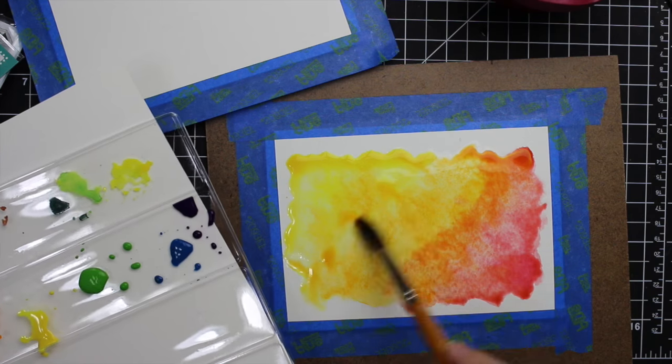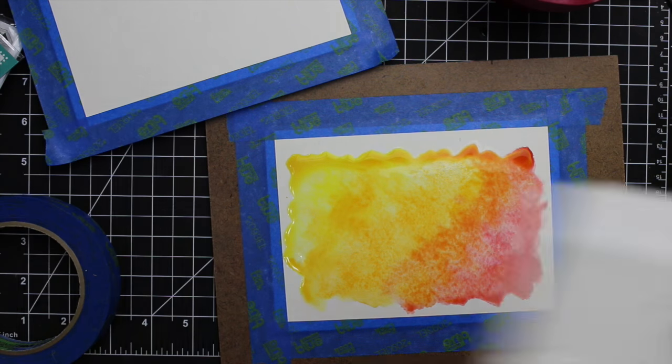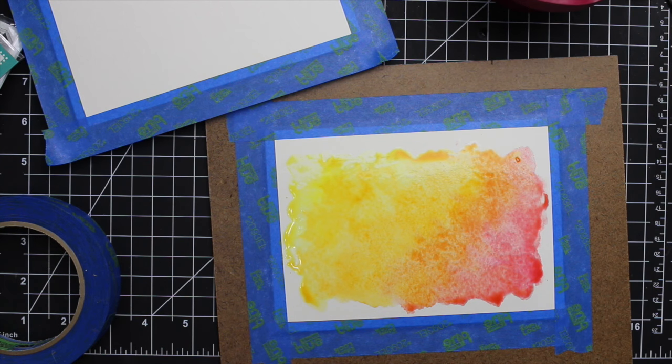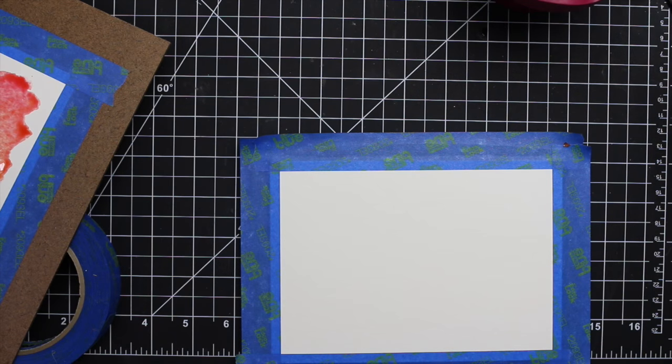And then I dropped in the yellow, the orange, and the kind of pinky red color of watercolors. And the color was already starting to pool along the edges. So I just used a tissue to pick up those pools of color and then I set it aside.